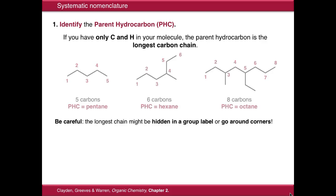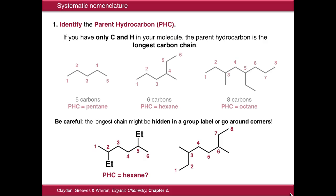One thing to be aware of is that your longest carbon chain might be hidden in an atom label and it could possibly even go around corners. So in this example here, you might think that the parent hydrocarbon is hexane because six looks like the longest carbon chain. In actual fact, if we draw out the ethyl groups, we can see that the longest hydrocarbon chain is eight carbons long. Therefore, our parent hydrocarbon chain is octane.